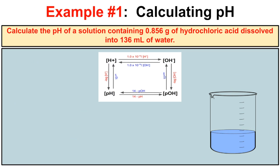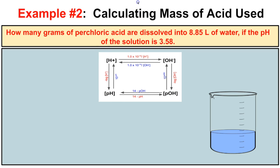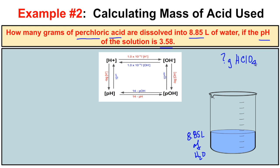In this second example, it says how many grams of perchloric acid are dissolved into 8.85 liters of water if the pH of the solution is 3.58. We have 8.85 liters of water in this beaker. We'll add a certain number of grams of perchloric acid, which is a strong acid that dissociates completely. The pH of this solution is 3.58, and we need to break this into several steps.